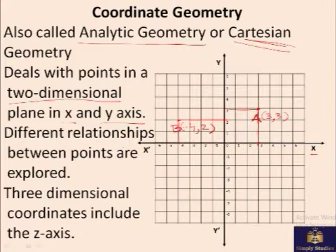Different relationships between these points are explored in coordinate geometry. There is a three-dimensional coordinate axis also, in which there is a Z axis, but it is out of the scope of GRE.